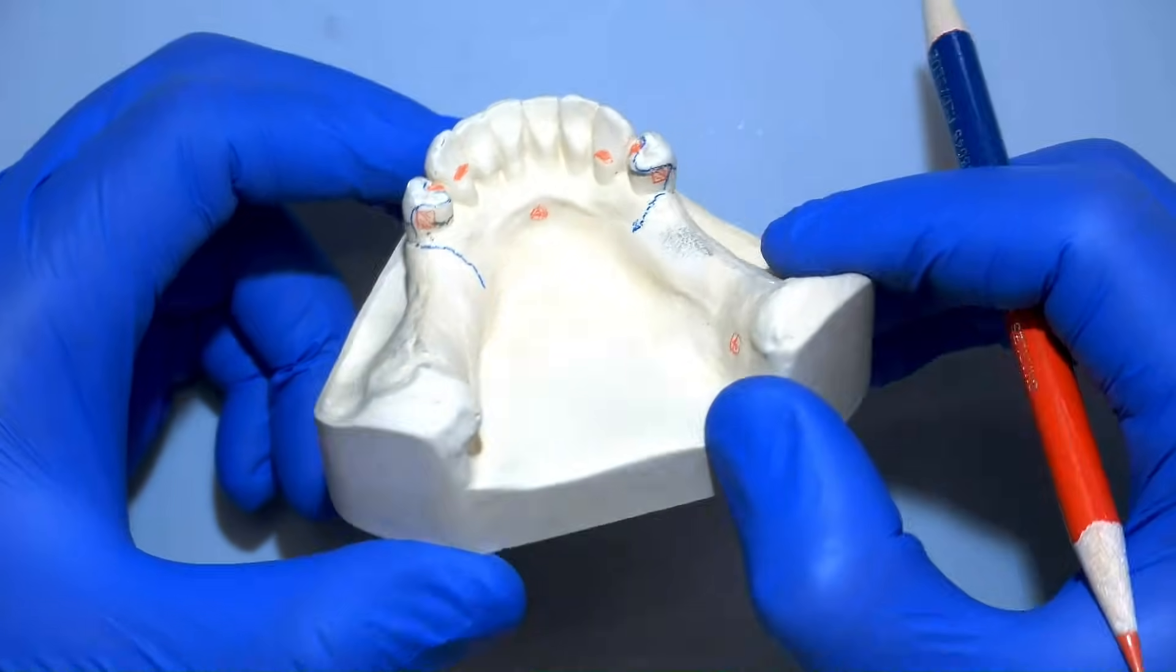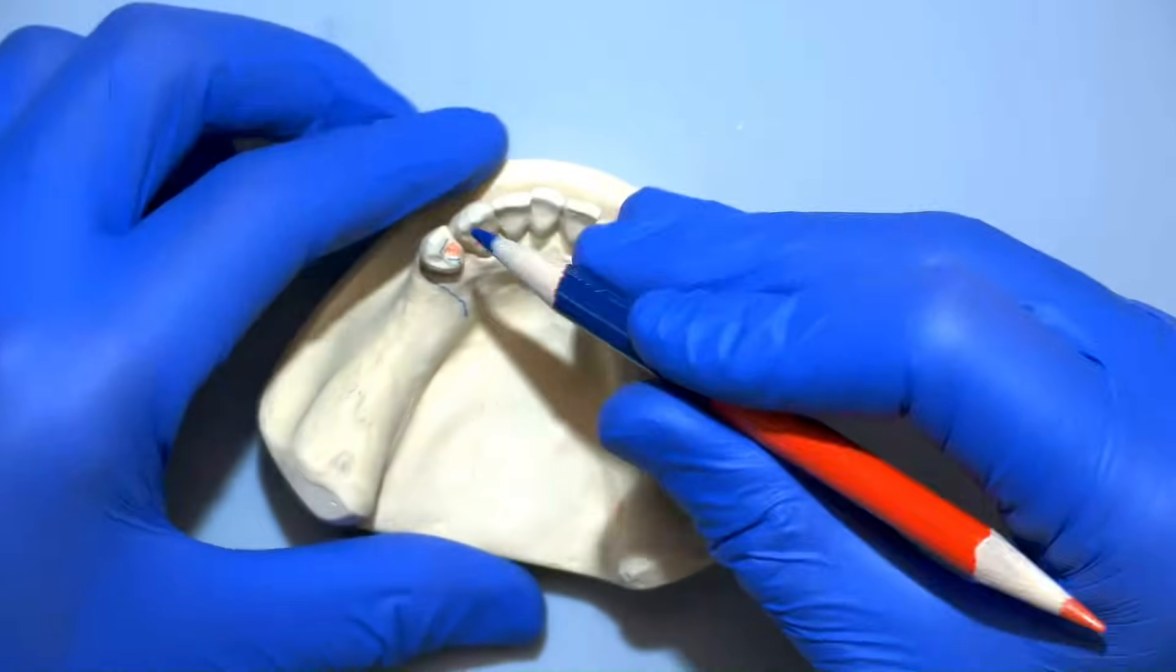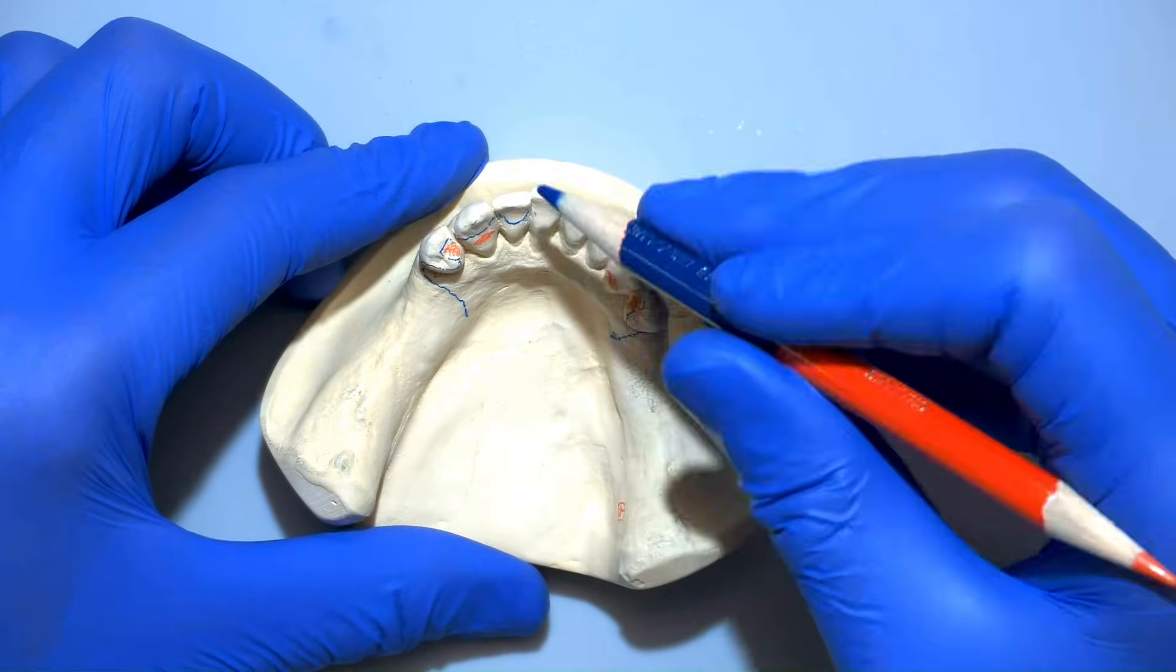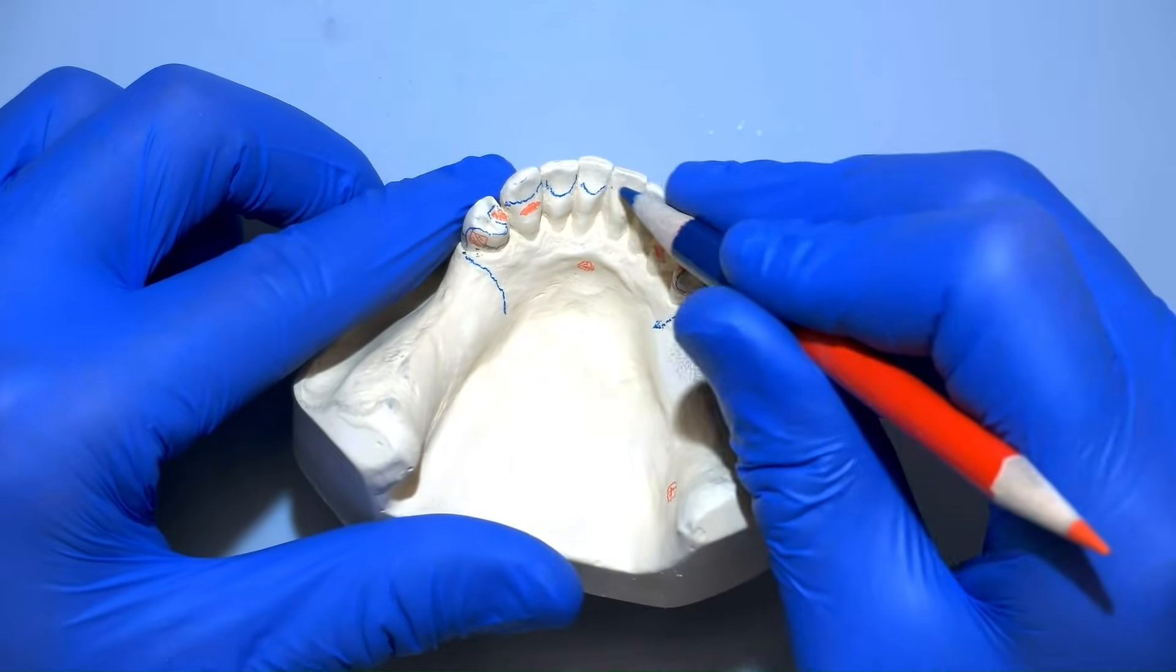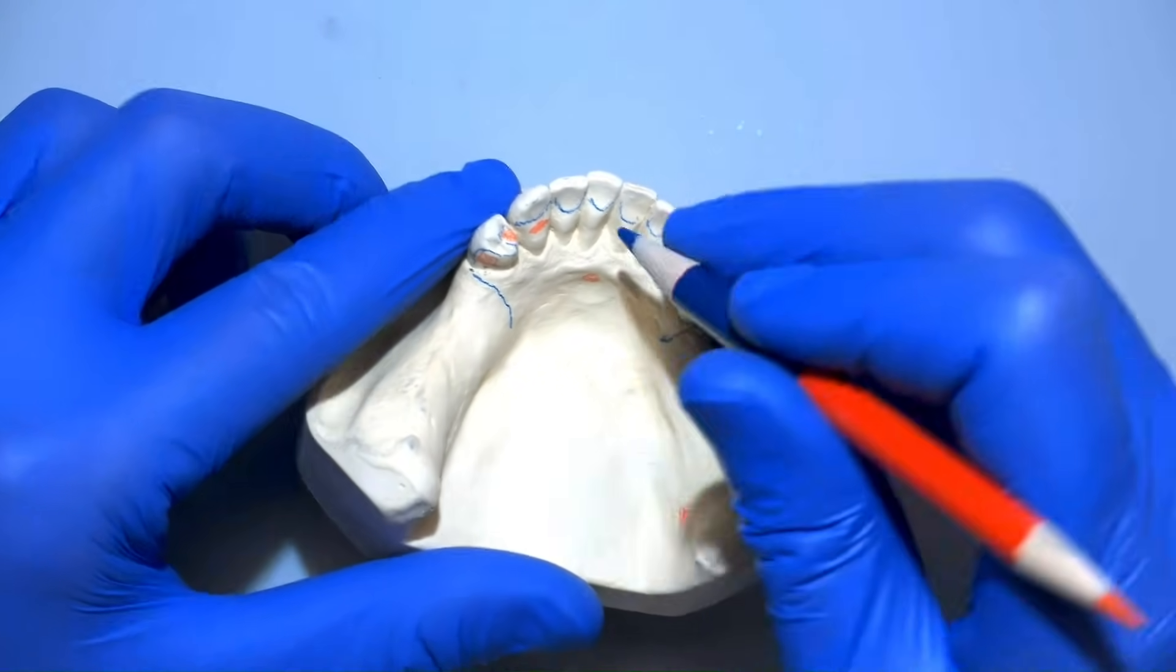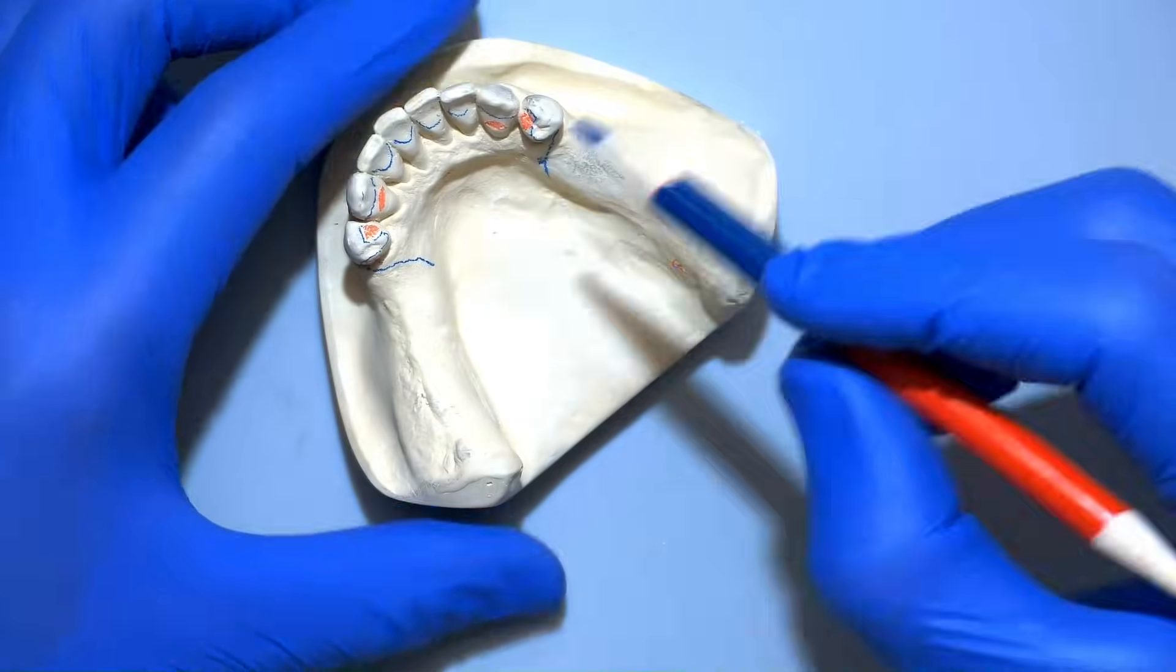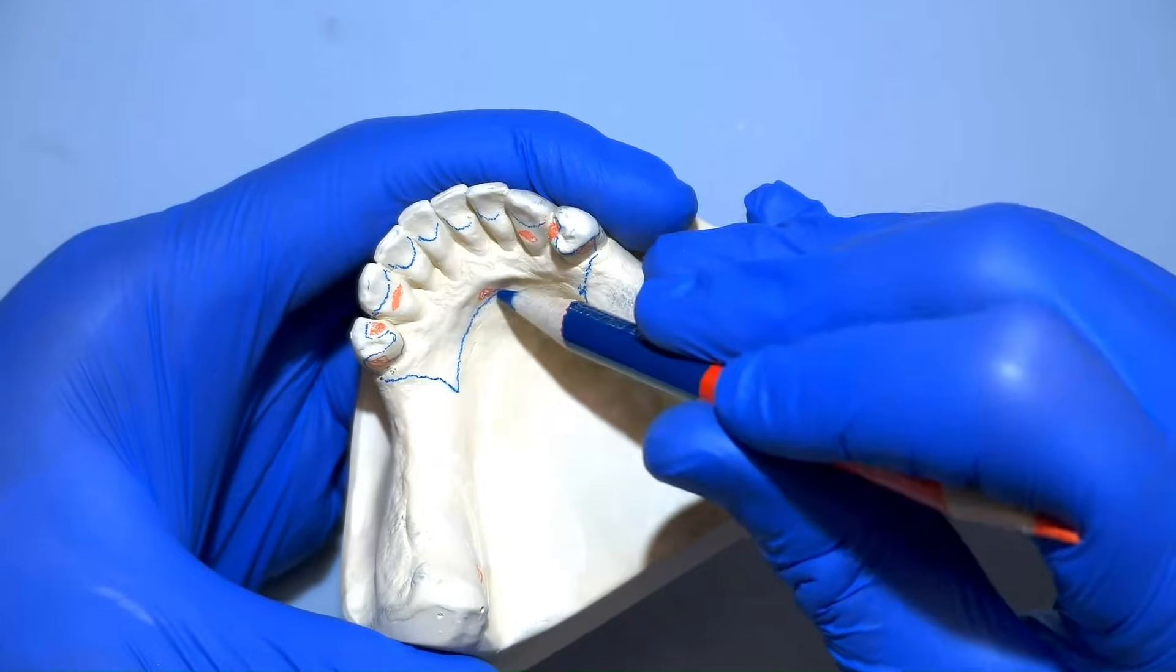Now that that's done, we'll go ahead and start drawing the lingual plate, starting with the cingulum rest, going from one proximal contact to the other, draping over those cingulums as such. Now we'll finish the major connector by joining the two ends of the finish line.